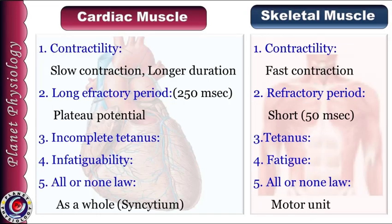Let us quickly summarize the properties of cardiac muscle. Cardiac muscle has the property of contractility, and its contraction lasts for longer duration compared to skeletal muscle, which shows a faster twitch. Cardiac muscle shows a long refractory period — about 250 ms — whereas skeletal muscle shows a shorter refractory period of about 50 ms, because of the difference in the type of action potential. Because of this long refractory period, cardiac muscle cannot be tetanized or fatigued, whereas skeletal muscle can be tetanized and fatigued. All or none law is demonstrated by cardiac muscle as a whole — due to the presence of gap junctions forming a syncytium — whereas in skeletal muscle, all or none law is demonstrated by individual motor units. So these were the mechanical and metabolic properties of cardiac muscle and their comparison with skeletal muscle.